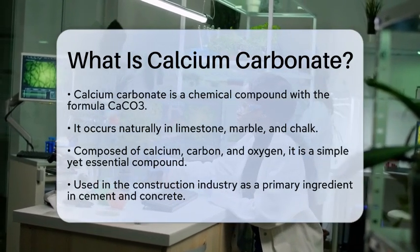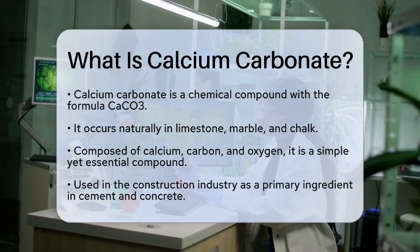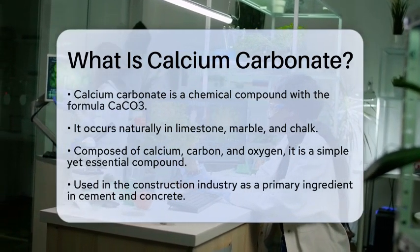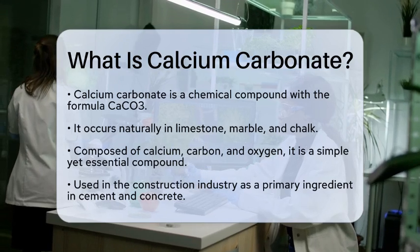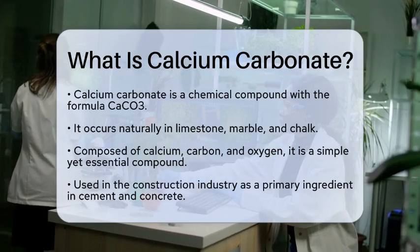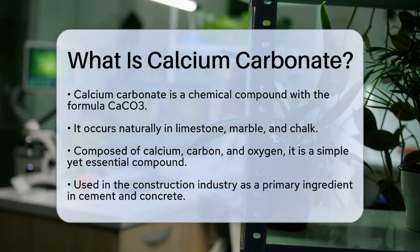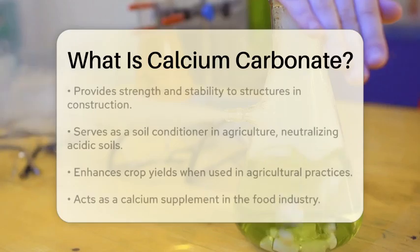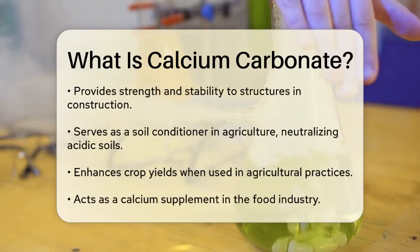Calcium carbonate is a chemical compound with the formula CaCO3. It occurs naturally in limestone, marble, and chalk, and is formed through geological processes. This compound is composed of calcium, carbon, and oxygen, making it a simple yet essential building block for many natural and manufactured materials.